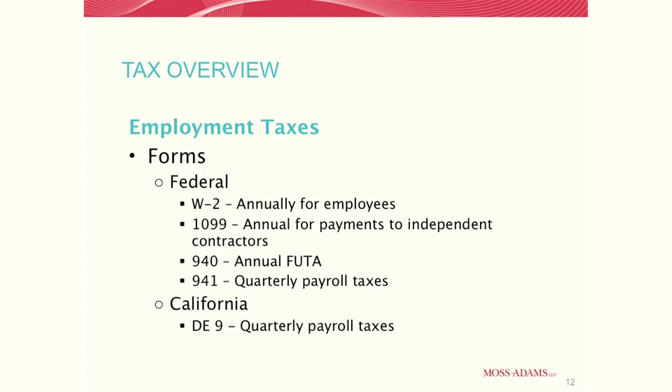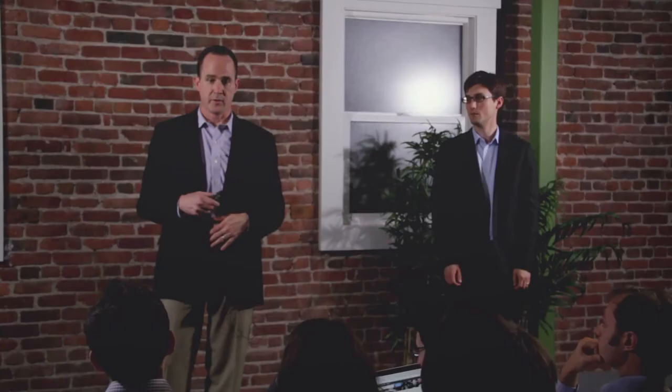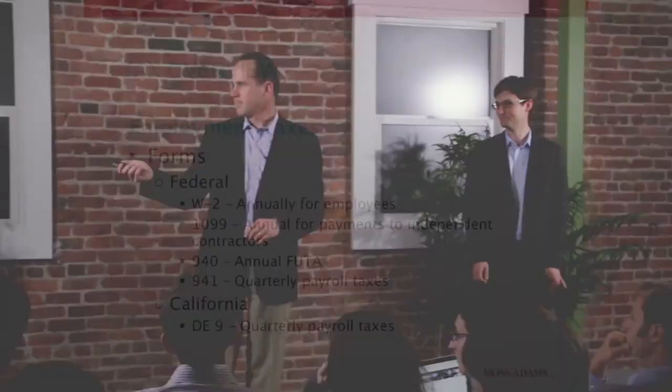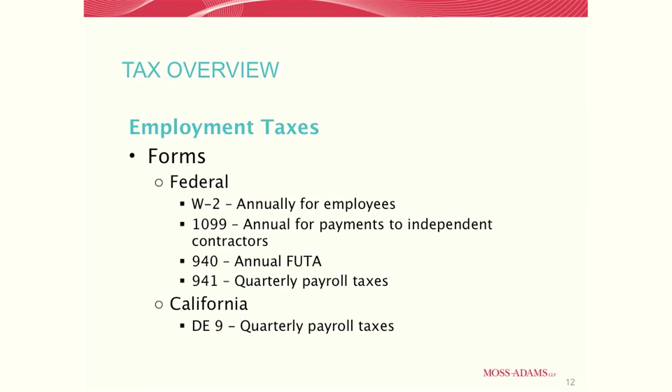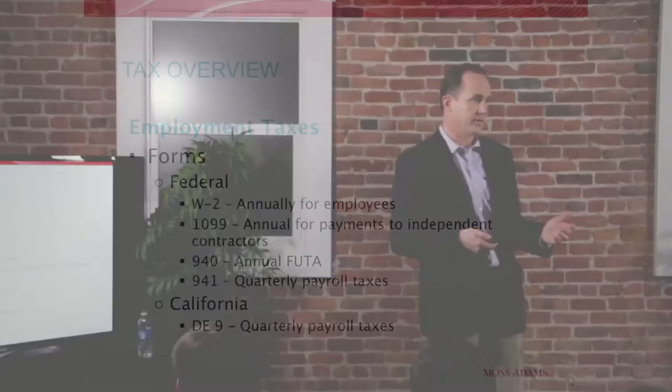Just some of the common forms: W-2, 1099s. If you were in business and operating last year and you paid any contractors, you should be issuing 1099s before the end of the month. If you had employees you should also be issuing W-2s. I think you should have done that last month, but if you do it, do it soon. There's annual 940 for all the withholding taxes. There's quarterly withholding taxes also. California has some comparable forms. Federal and state both have filing requirements for these withholding taxes and payroll taxes.